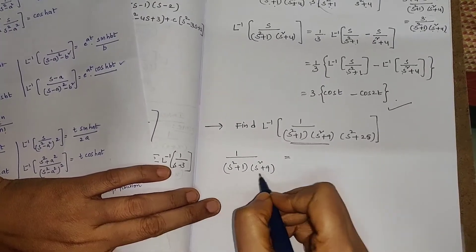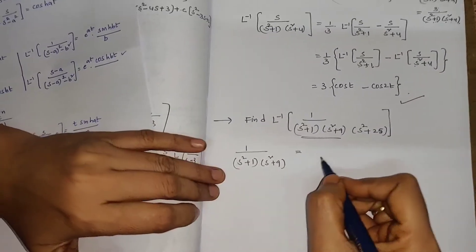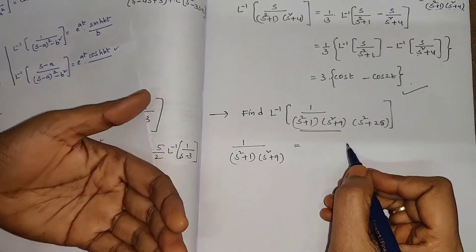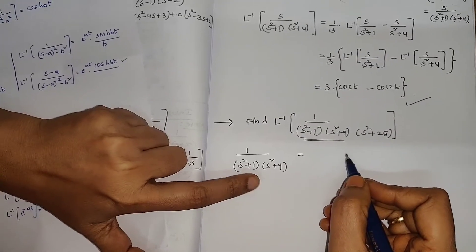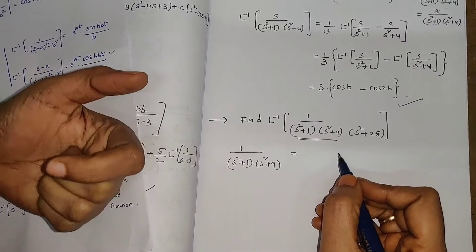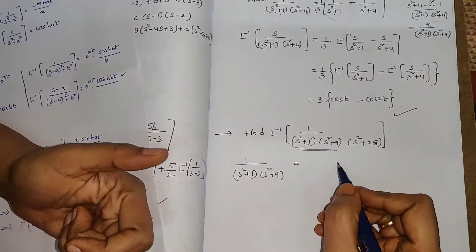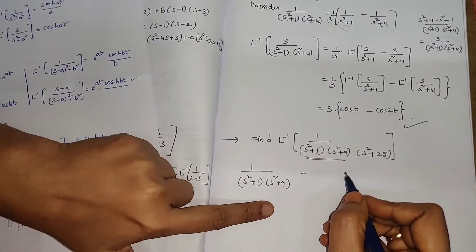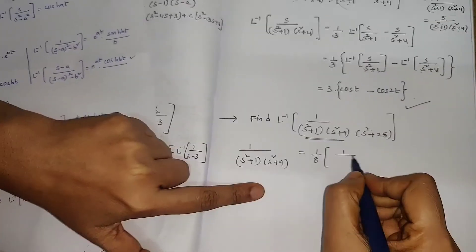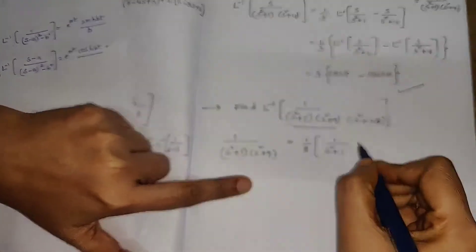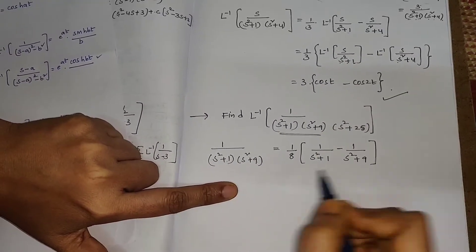To write down this product as a summation we apply the same technique — since these are quadratic we would get 4 constants A, B, C, D using partial fractions, which would be a lengthy process. So to avoid that: 9 minus 1 is 8, so 1/[(S² + 1)(S² + 9)] can be written as 1/8 times [1/(S² + 1) minus 1/(S² + 9)]. This is equivalent.